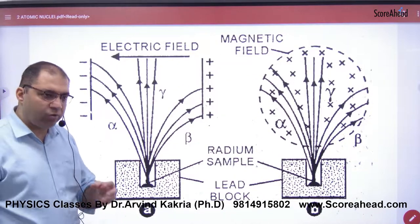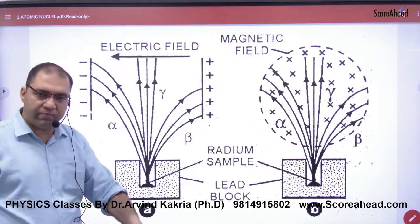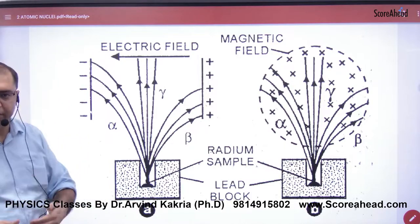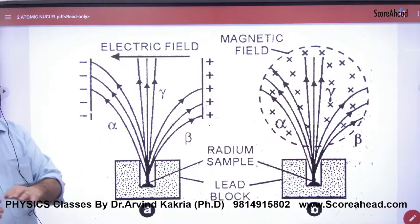When radioactivity occurs, one nucleus converts into another nucleus. In this conversion, alpha, beta, or gamma radiation can be emitted.